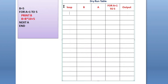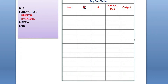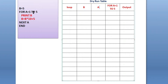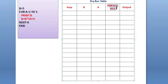Let's begin. I've written here 'loop' — this will decide how many times the for loop will execute. I've written 'b' because this variable b is used in the program, and 'a' which is also used in the program. I've written 'for loop' to check whether the value of a is in the range of 1 to 5 or not, then 'output' to display the printed value.